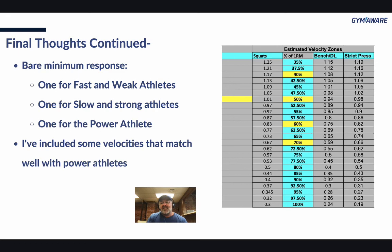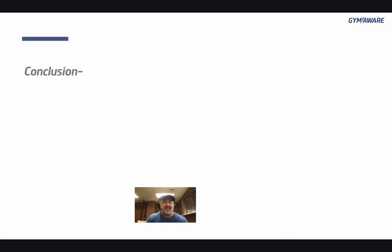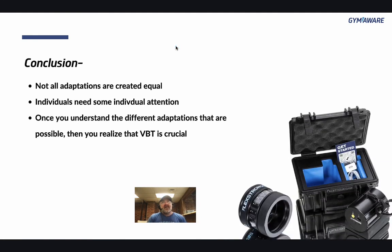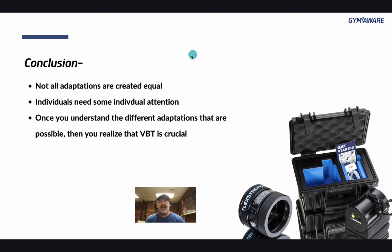I've given you everything you could possibly need for it, so I hope you enjoy it and put it to work. In conclusion: not all adaptations are created equal. Individuals need individual attention. Once you understand the different adaptations that are possible, you realize that velocity-based training is crucial. I needed to define what each of my individual athletes needed, knowing they all need different adaptations. If you have any questions, email me at travis@jimaware.com.